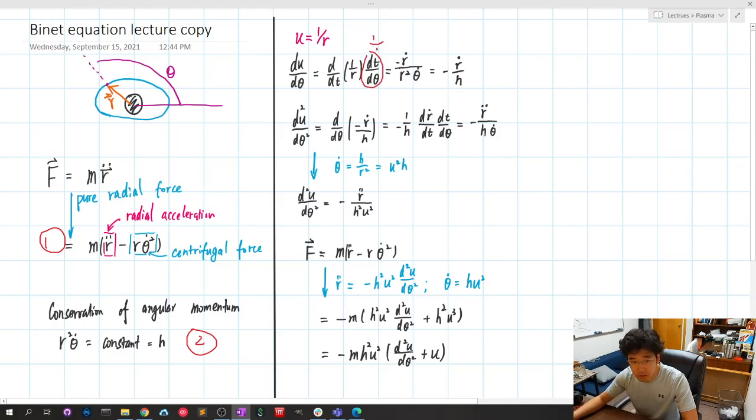This is 1 over θ dot. And this, let's do the chain rule. You just do the 1 over r squared and r dot. Then we end up having this.